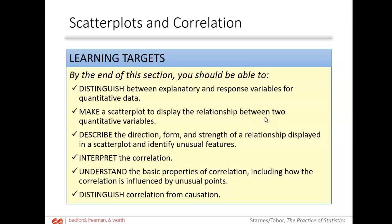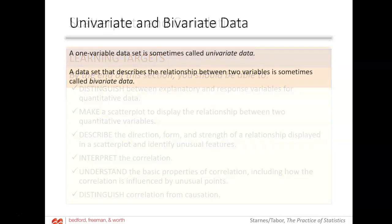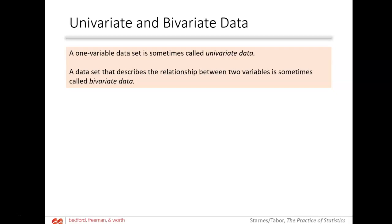We have a bunch of learning targets today, and this lesson is going to be split up into two days. We have to differentiate between what is known as univariate and bivariate data. Looking at those prefixes: uni meaning one, bi meaning two. So a one-variable data set is called univariate data, and a two-variable data set is called bivariate data. Those vocab terms will come up on your AP exam.